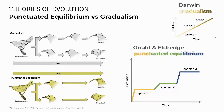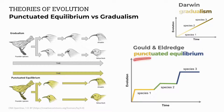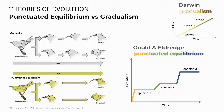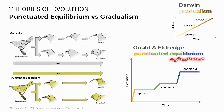Their theory followed 100 to 150 years after Lamarck and Darwin's theories. It explained sudden appearances of species with rapid changes — that's the punctuated bit — a little like a punctuation mark that indicates a pause, followed by long periods of time with no change. That's the equilibrium or stasis part.